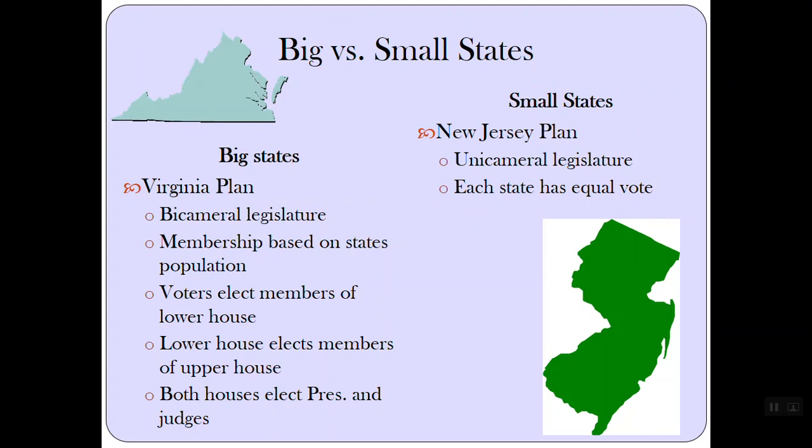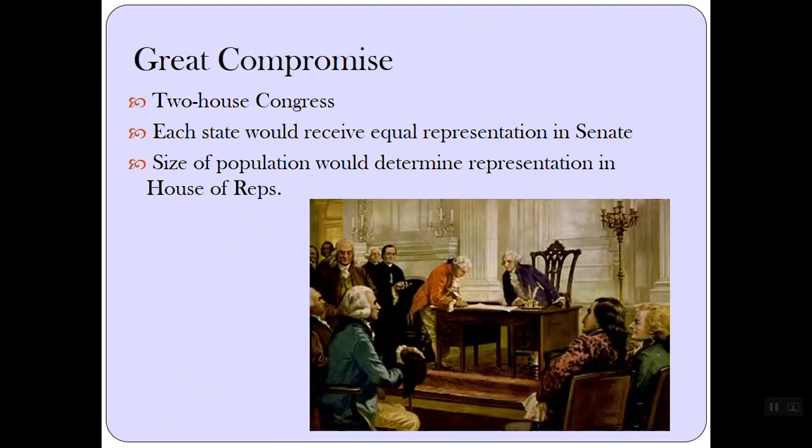The small states, on the other hand, proposed the New Jersey Plan — a unicameral legislature with only one house where each state had an equal vote, very similar to the Articles of Confederation where every state had one vote. So they came up with the Great Compromise, or the Connecticut Compromise. This would be a two-house Congress: each state would receive equal representation in the Senate, and the size of the population would determine representation in the House of Representatives.